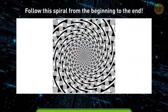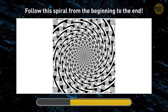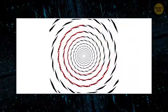The task here is simple. Follow this spiral from the beginning to the end. Gotcha! You can't do it because this spiral isn't a spiral. It's made up of concentric circles. Your brain fills in the gaps for you because it's confused by this crazy background.